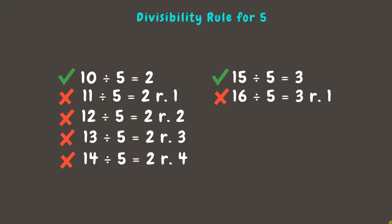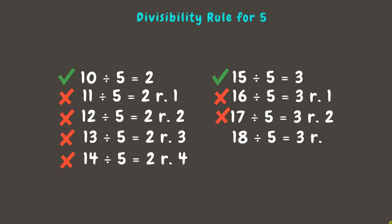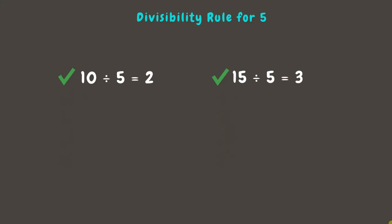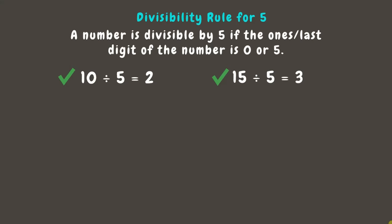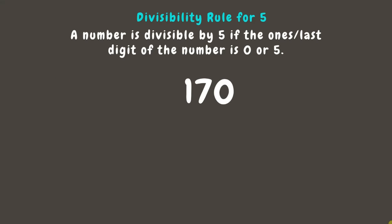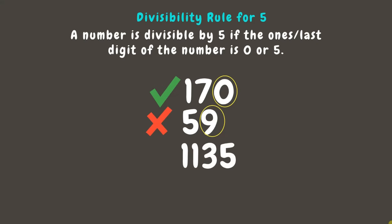17 divided by 5 is 3 remainder 2 — not divisible. 18 divided by 5 is 3 remainder 3 — not divisible. 19 divided by 5 is 3 remainder 4 — not divisible. A number is divisible by 5 if the ones or last digit is 0 or 5. Examples: 170 has last digit 0 — divisible by 5. 59 has last digit neither 0 nor 5 — not divisible. 1135 has last digit 5 — divisible by 5.